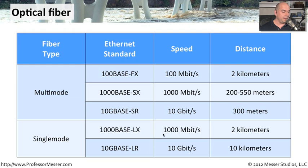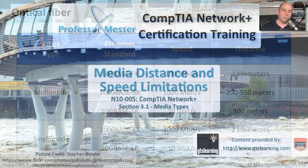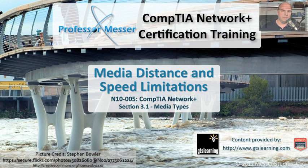If we're working with single-mode fiber, we can go much farther distances than with multi-mode. For gigabit networks using the 1000Base-LX standard — note LX versus SX, with LX being for single-mode — we can go a distance of two kilometers, increasing range by almost a factor of four. For 10-gigabit connectivity over 10GBase-LR, which differs from 10GBase-SR, instead of 300 meters, we can go a distance of 10 kilometers using single-mode fiber.